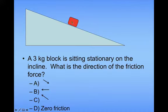So without friction, this would be sliding down and to the right. So the friction must be opposing that to keep it from moving, so the friction is directed up and to the left.